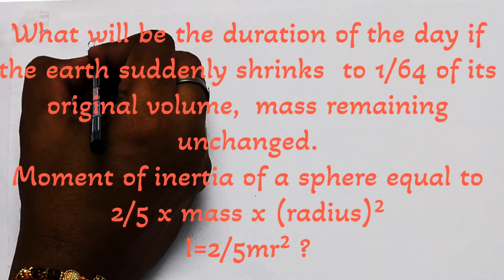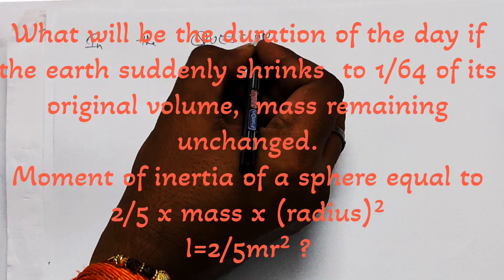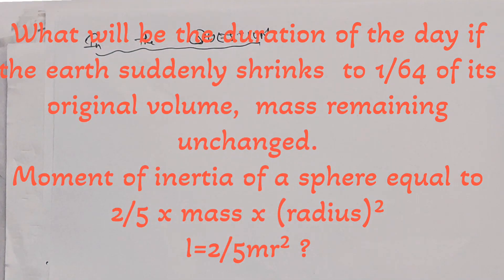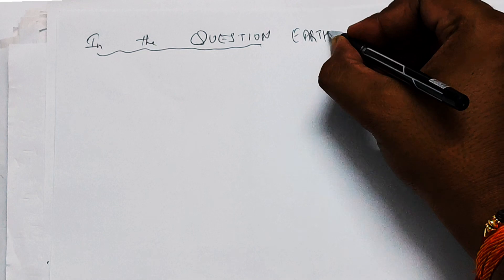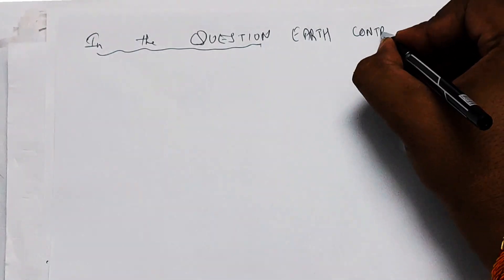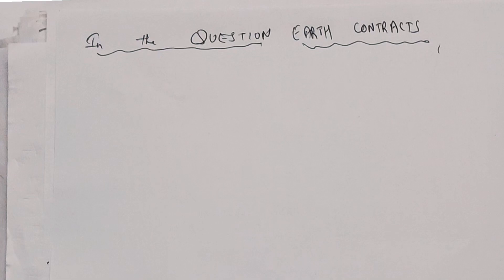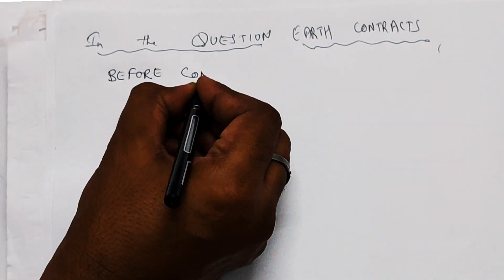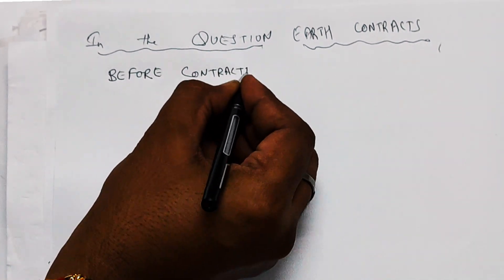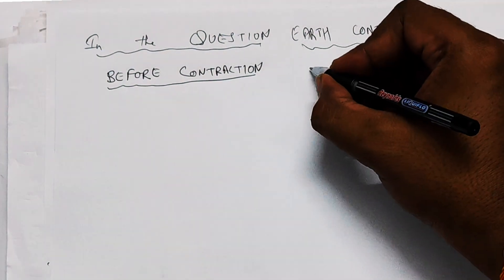In this numerical, when the earth contracts to 1/64 of its volume, what will be the new day duration? Let us solve this question. We will take the data given in the numerical — what is before the contraction and what are the details of earth after the contraction.